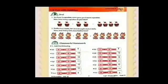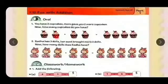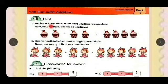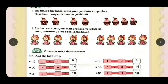Now children, come to page number 7 of your Maths workbook. So first question: You have 2 cupcakes. Mom gave you 2 more cupcakes. Now, how many cupcakes do you have? So you have 2, and mom gave 2 more. Let's count: 1, 2, 3, 4. So total you have 4 cupcakes all together.